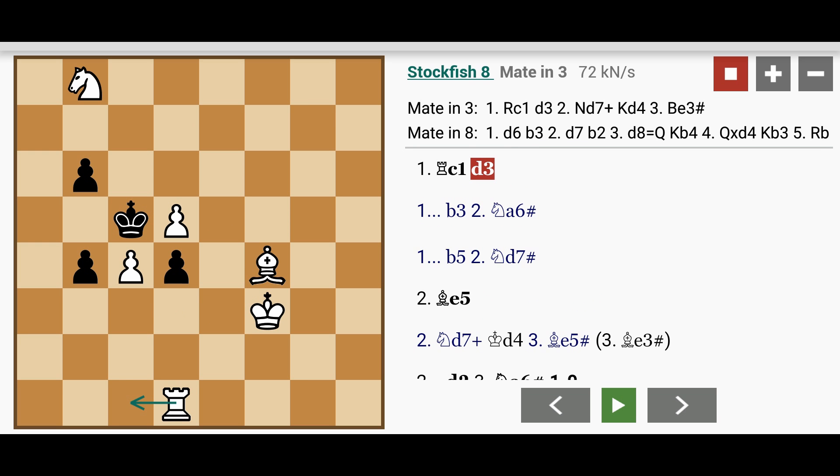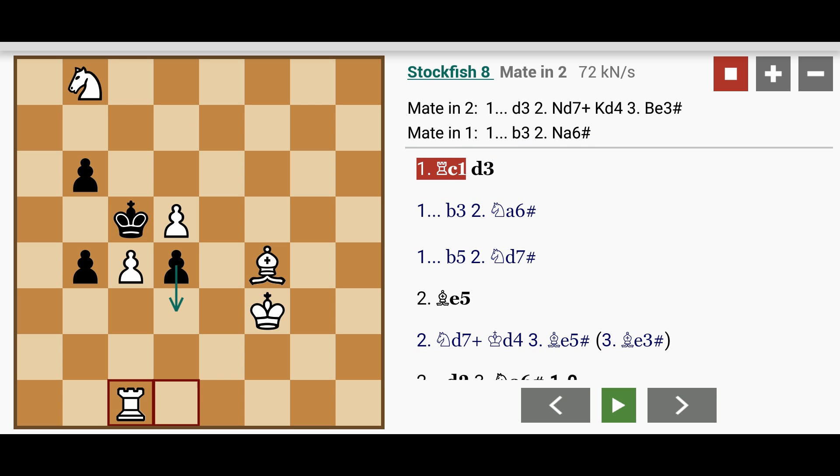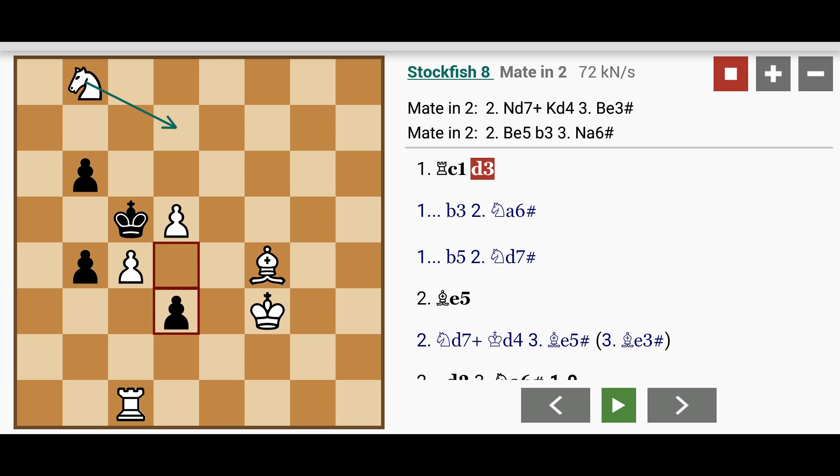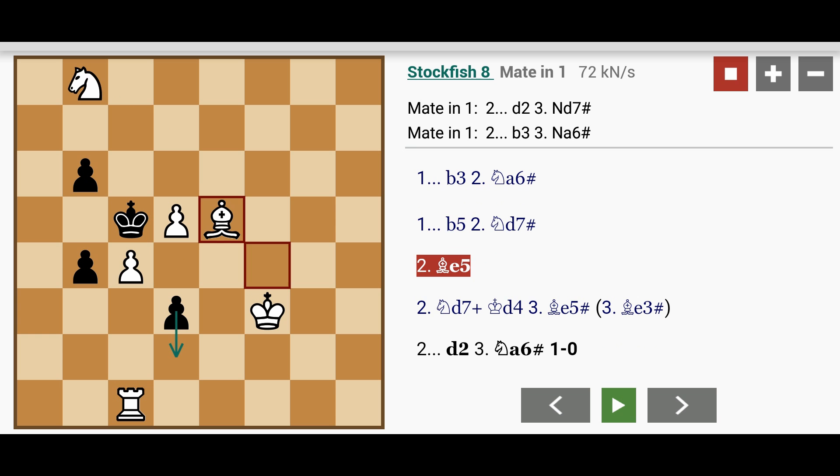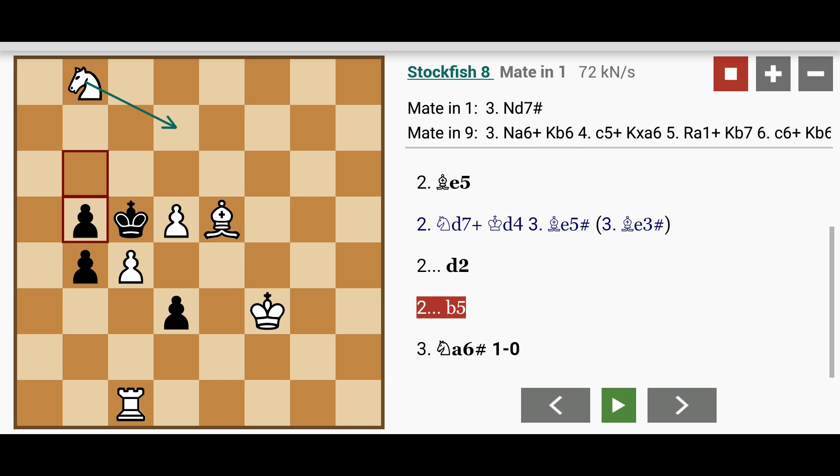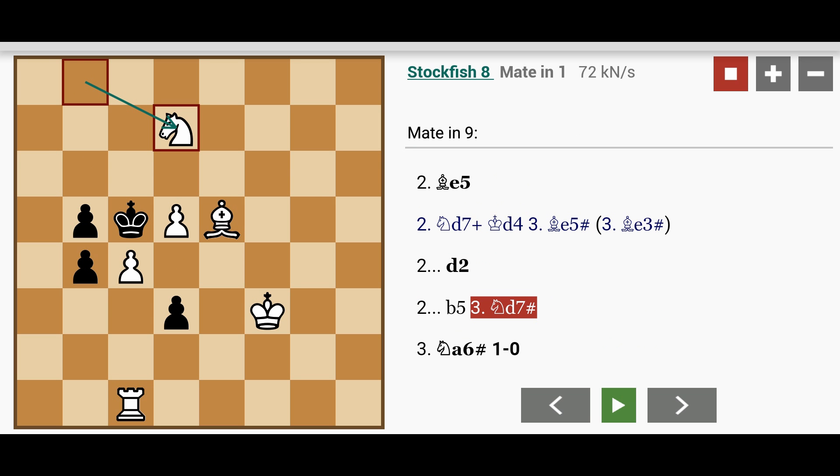So going back to the initial position, we can see that white wins by playing rook to c1, defending the pawn. Black plays d3. White plays bishop to e5. Black plays any move. Let's try this time b5. And white wins with knight to d7, checkmate.